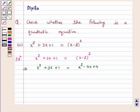Again, we can write this equation as x squared minus x squared plus 3x plus 4x plus 1 minus 4 equals 0 by shifting the terms from the right-hand side to the left-hand side.